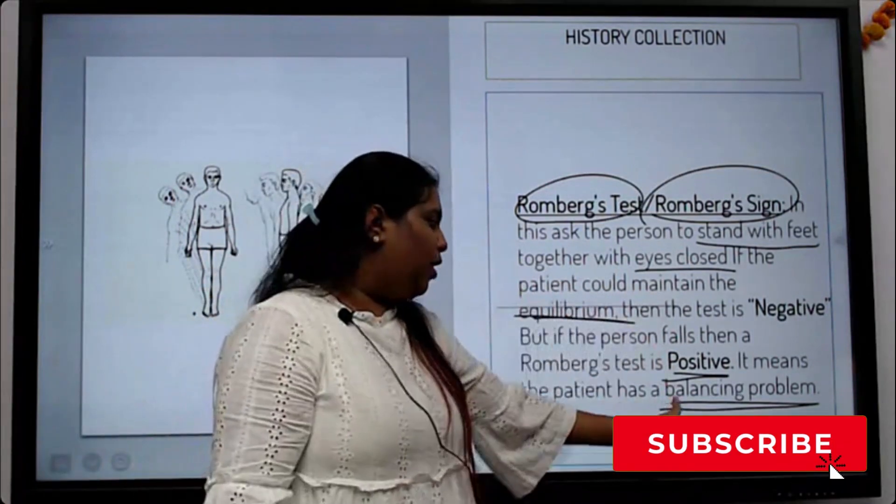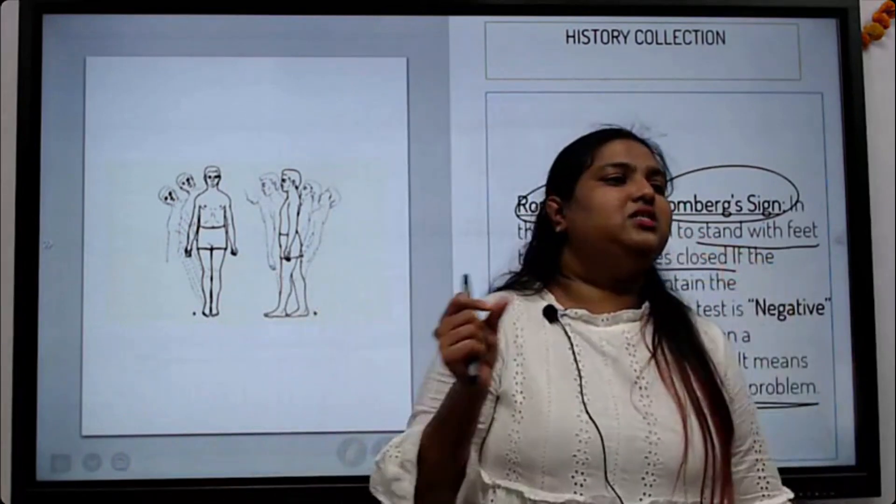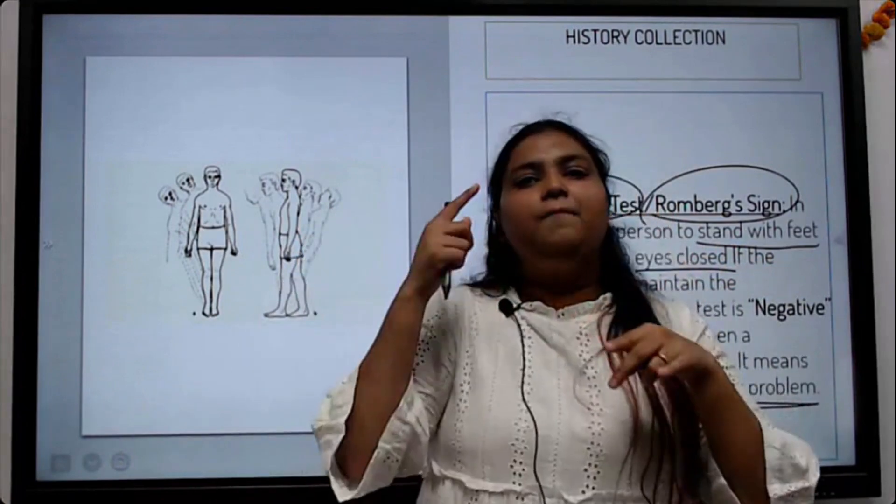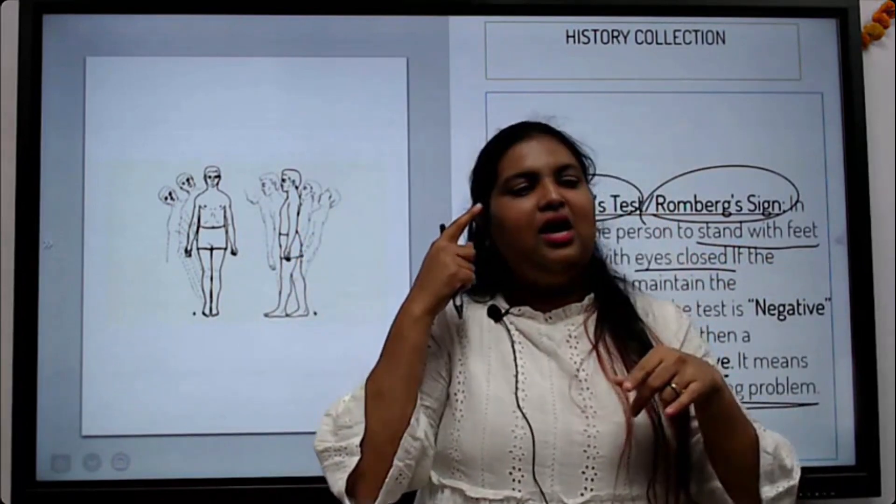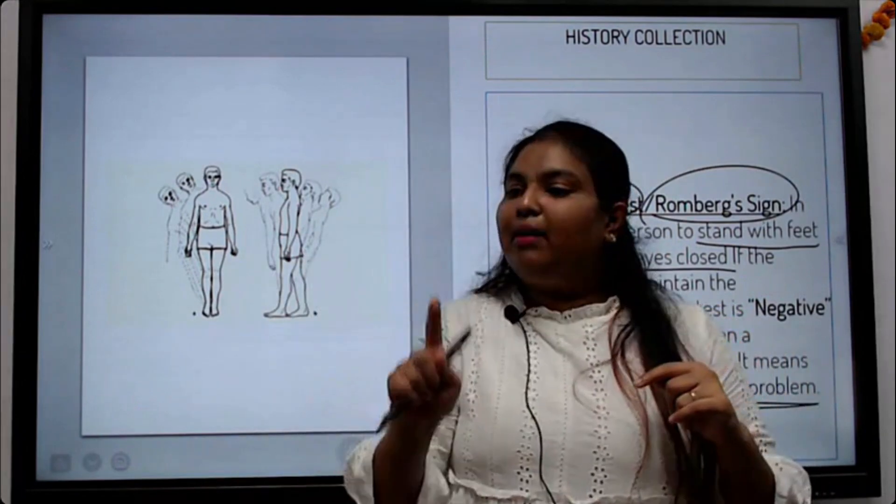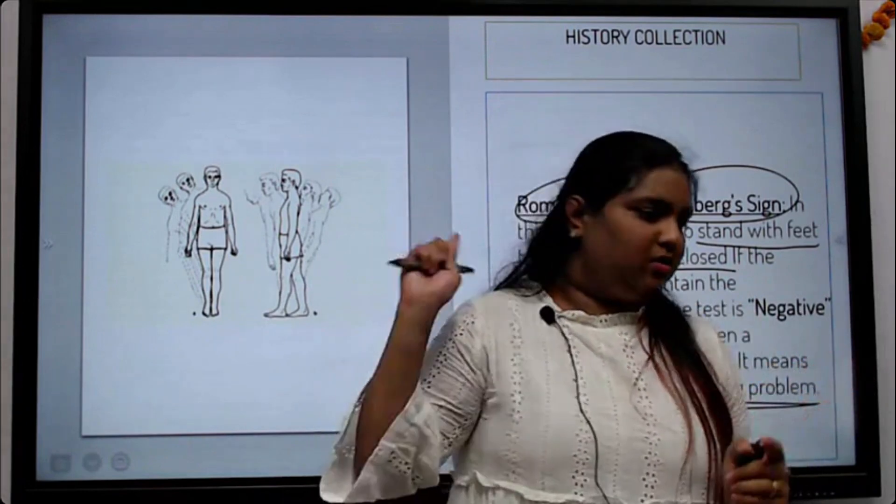Problem in balance. The name of the test is Romberg test or Romberg sign - feet together, eyes closed. If they are moving it means positive, they have balance problems. If they are not moving, negative, no balance problems.